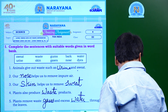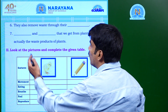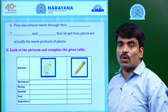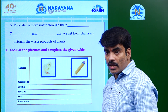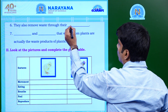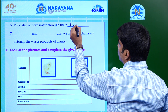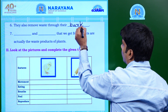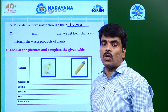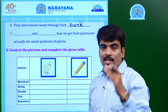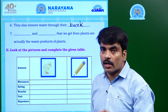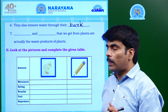Moving to the next question: Plants also remove waste through their bark. Plants remove their waste from one part — that part is nothing but the bark. A big plant is called a tree, and its stem is called a trunk. The trunk is covered with bark, and through the bark, waste products are removed from the plant.